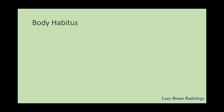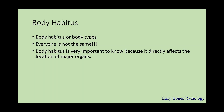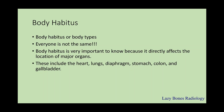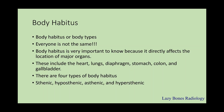Body habitus. Using these two types of subdivisions, we are able to identify the placement of organs. But as you may know, not everyone is built the same. In our final section, we'll be learning about the different body types or body habitus that you'll be seeing in your field. Body habitus is very important to know because it directly affects the location of major organs, including the heart, lungs, diaphragm, stomach, colon, and gallbladder. There are four types of body habitus: sthenic, hyposthenic, asthenic, and hypersthenic.